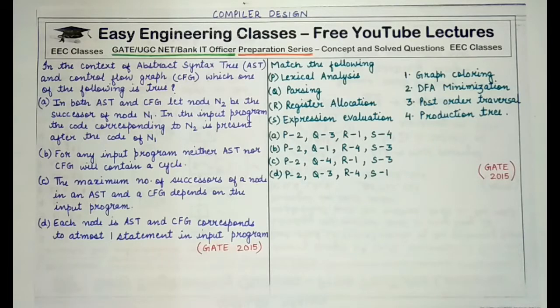First option is: in both AST and CFG, let node N2 be the successor of node N1. In the input program, the code corresponding to N2 is present after the code of N1. Now this statement is not correct. Why is it not correct?